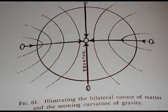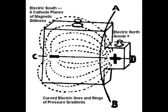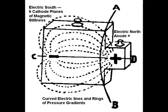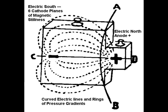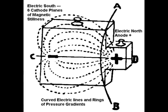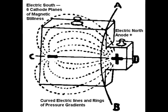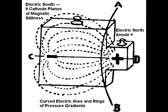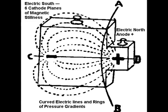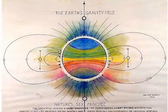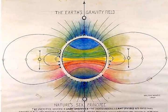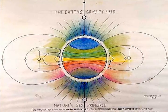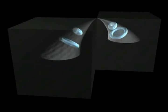The positive sign represents the electric north of all wave fields, and the negative sign represents the six cathode faces of the cube, which are the south direction of motions from the center. These curved electrical pressure gradients have been falsely defined by academia as magnetic fields and are in reality gravity-controlled rings of spiraling electricity.